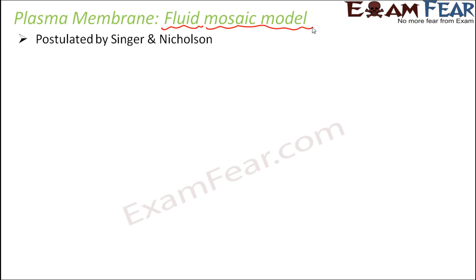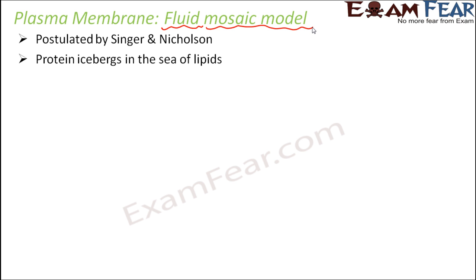This model was postulated by two scientists named Singer and Nicholson, and they described this model as 'protein icebergs in the sea of lipids.' So lipids are all around and proteins are present here and there. If you have a sea and in that sea you have icebergs which are quite big, they are either on the surface of the sea or inside the sea — similarly, proteins can be either inside or on the surface of the lipids.